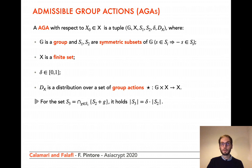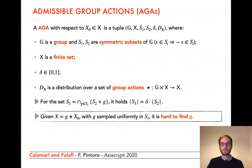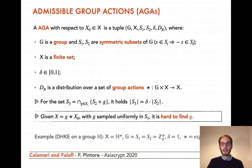The requirements for this tuple are only two. The first one determines the probability of aborting of P2 in the OR proof: it requires that the intersection S3 of the sets S2 plus g for g in S1 has cardinality equal to delta times the cardinality of S2. The second requirement is that the group actions should provide a hard problem. In particular, given g star x0 where g is sampled uniformly in S1 and star is sampled from dx, it should be hard to find g. We also require some natural efficiency properties.